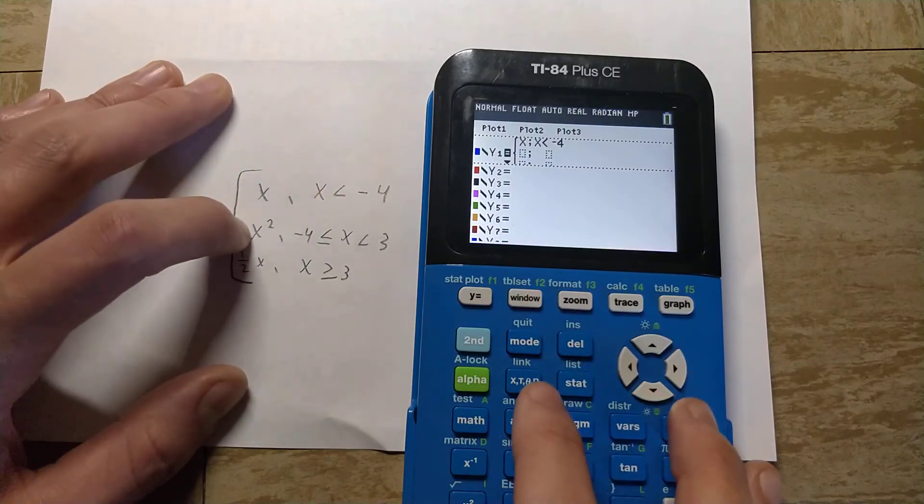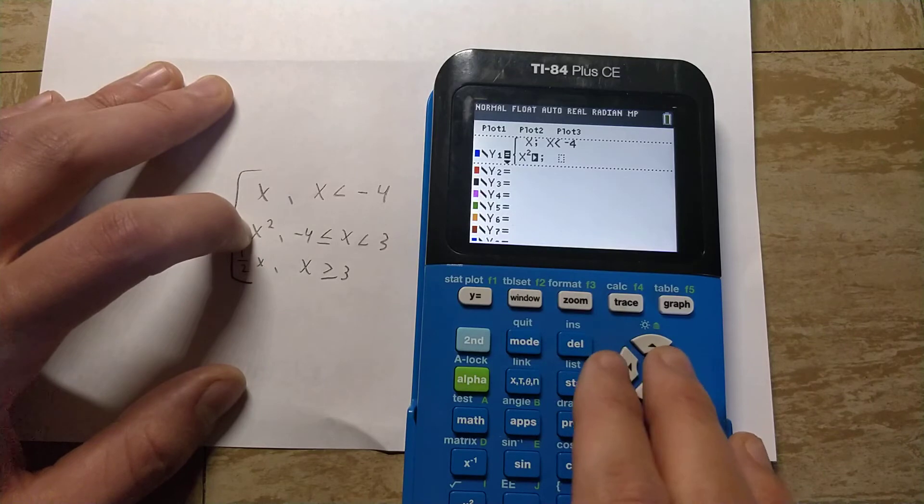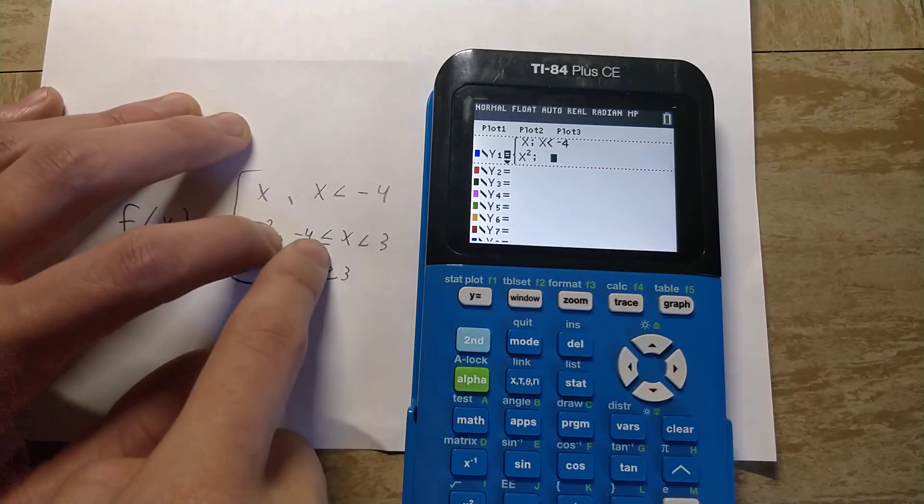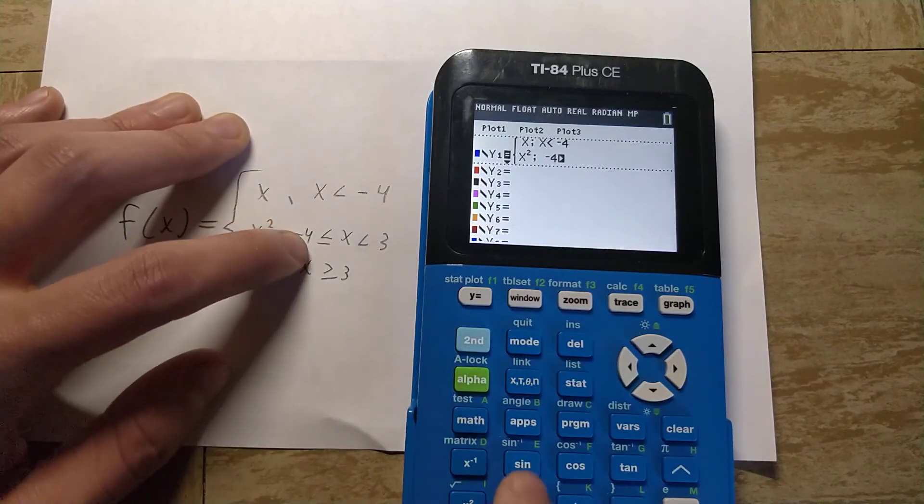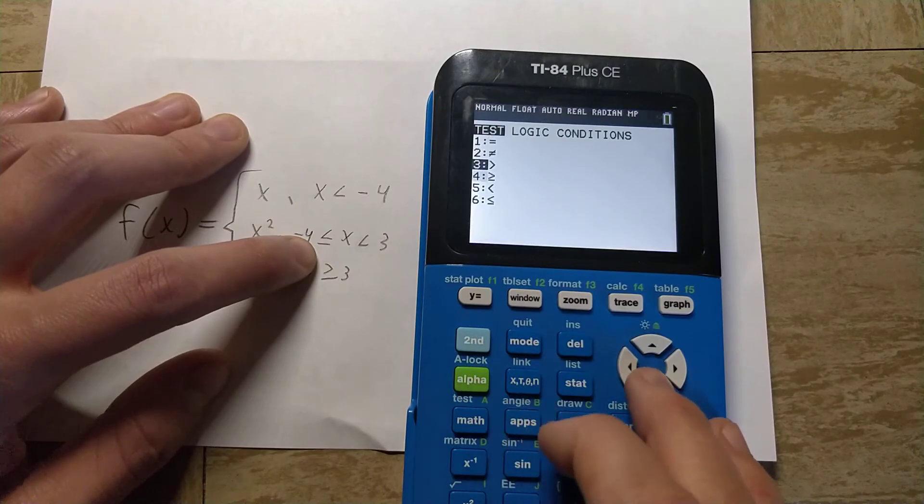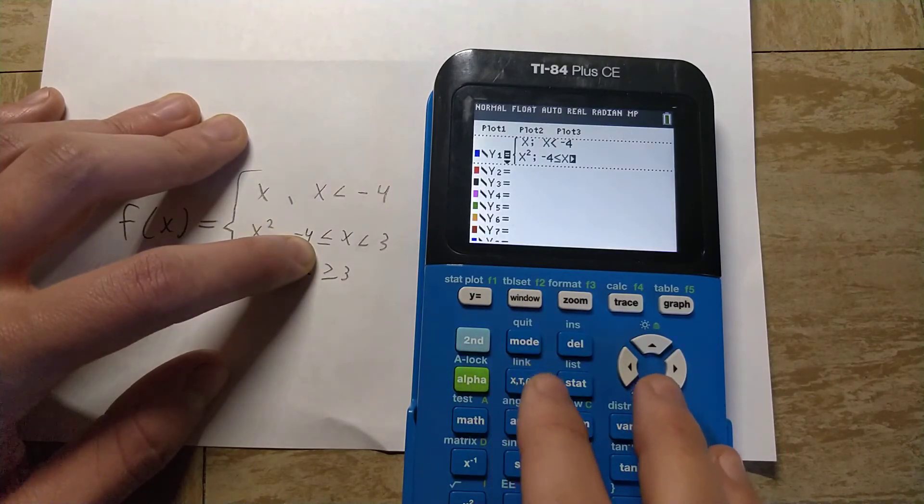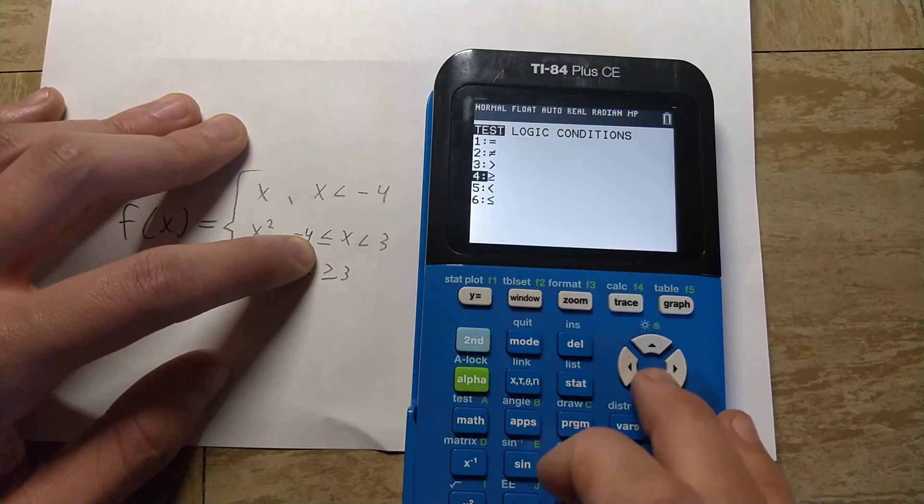Then we have the second one here, x squared, and we would type it in exactly as we see it, so negative four is less than or equal to x, and x is less than three.